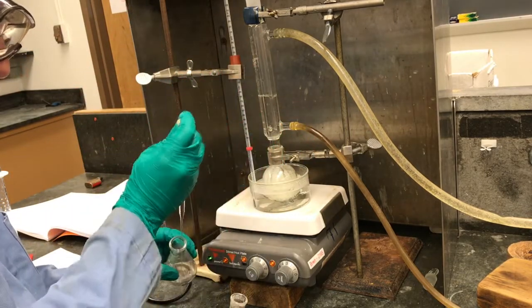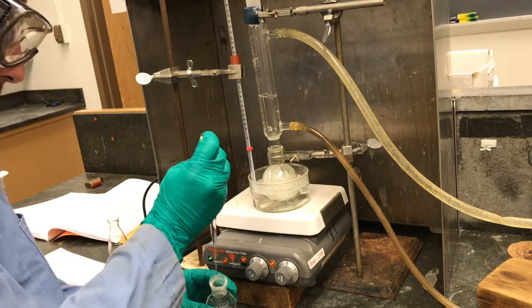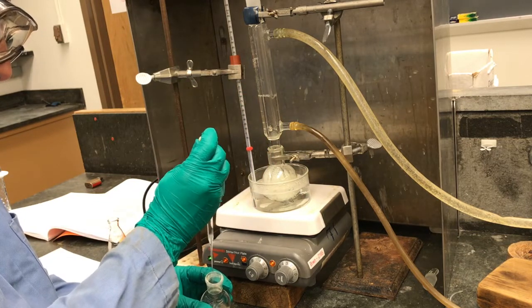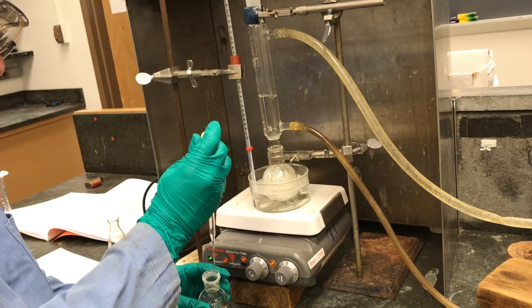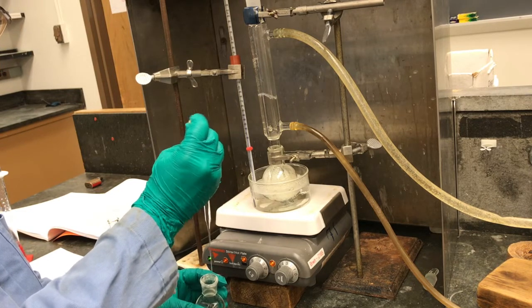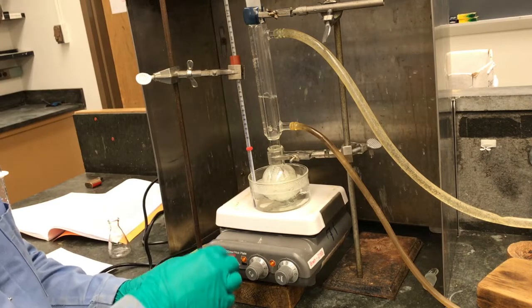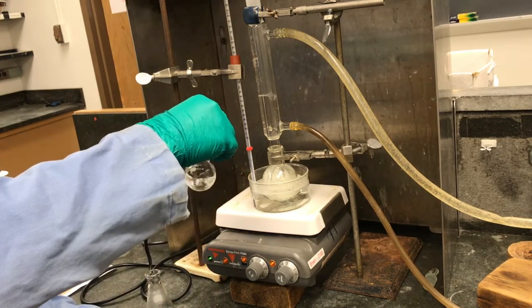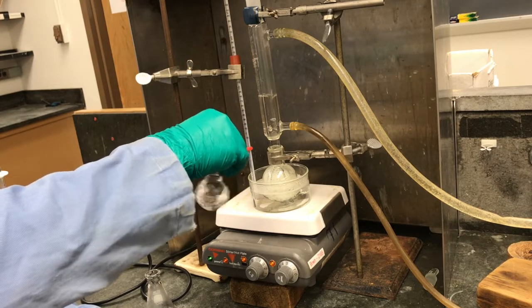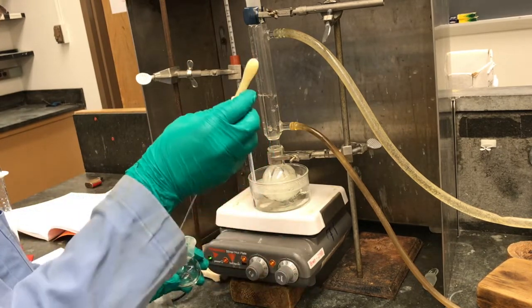It took about 4 total milliliters of hot methanol to get the p-nitrobenzaldehyde to completely dissolve. And then once we got it all dissolved, we're just going to add it to the top of the reaction through the reflux condenser.